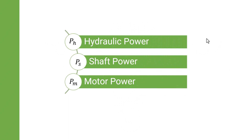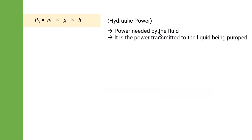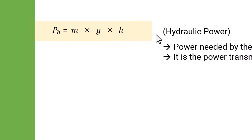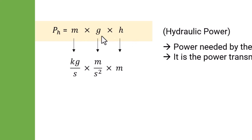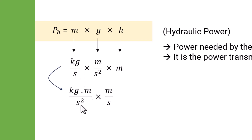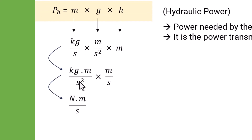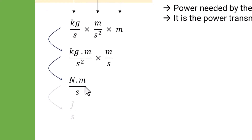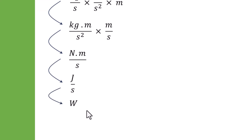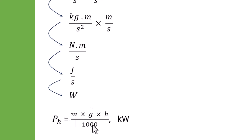In pump power calculation I will cover three different formulas: hydraulic power, shaft power, and motor power. Hydraulic power is the power transmitted to the liquid being pumped. The formula is very simple: it is mgh, where m is the mass flow rate in kg per second, g is the acceleration due to gravity in meters per second squared, and h is the differential head in meters. Rearranging units: kg·m/s² × m/s gives newtons × meters per second, which is joules per second, which is watts. Dividing by 1000 gives kilowatts.